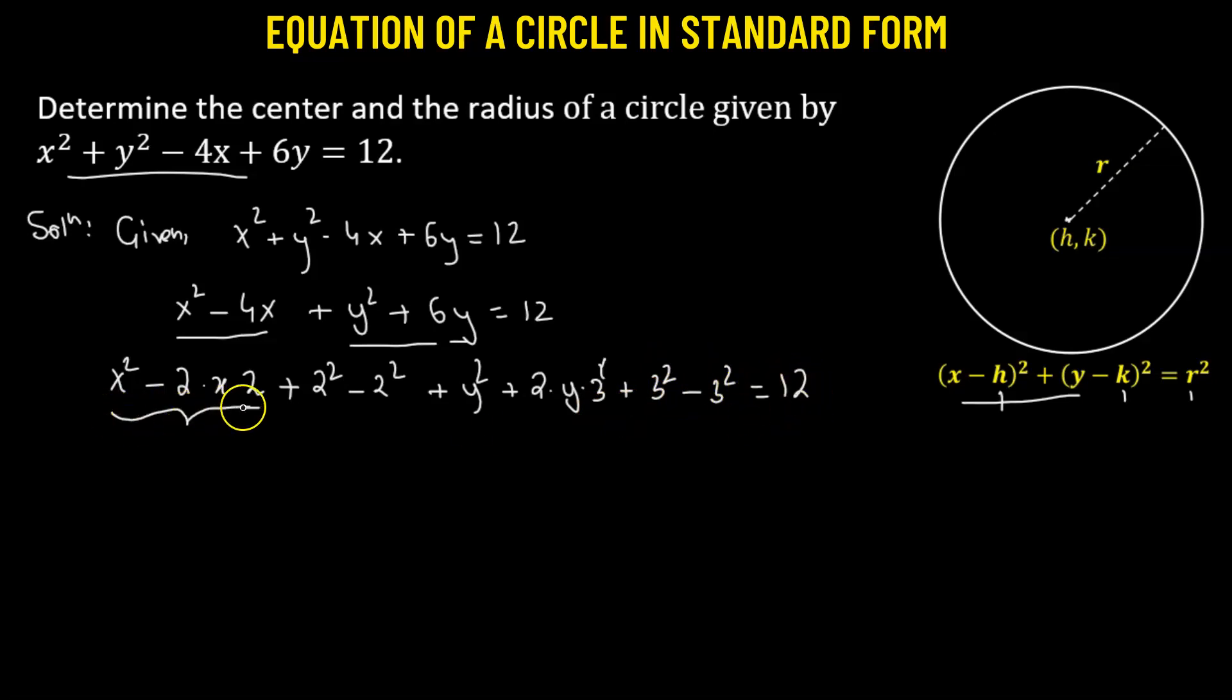In doing so, we have these three terms. This is nothing but the expansion of (x minus 2) squared. And then we have y squared plus 2y times 3 plus 3 squared, so that's the expansion of (y plus 3) squared. We have successfully converted x squared minus 4x to a perfect square, and y squared plus 6y is also converted to a perfect square. We are left with these extra terms: negative 2 squared and negative 3 squared.